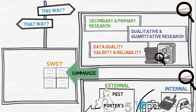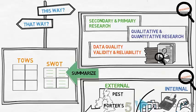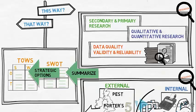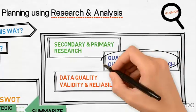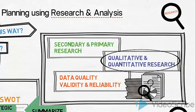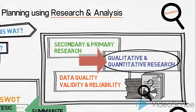This might be followed by a TOWS model in order to identify several strategic options to choose between. This will enable them to make informed, strategic decisions about which direction to take. Qualitative and quantitative research is what we will address with this video — so what is it, and how could we go about using these two types of data?